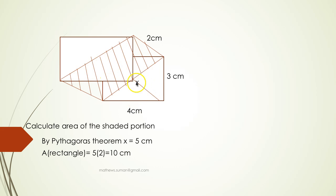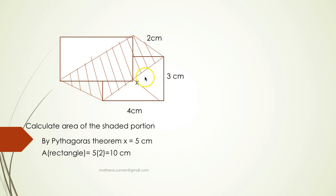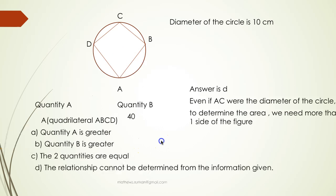By the Pythagorean theorem, x squared would be 4 squared plus 3 squared, so x squared equals 25, meaning x is 5 centimeters. Therefore, the area of this rectangle would be 5 into 2, that is 10 square centimeters.